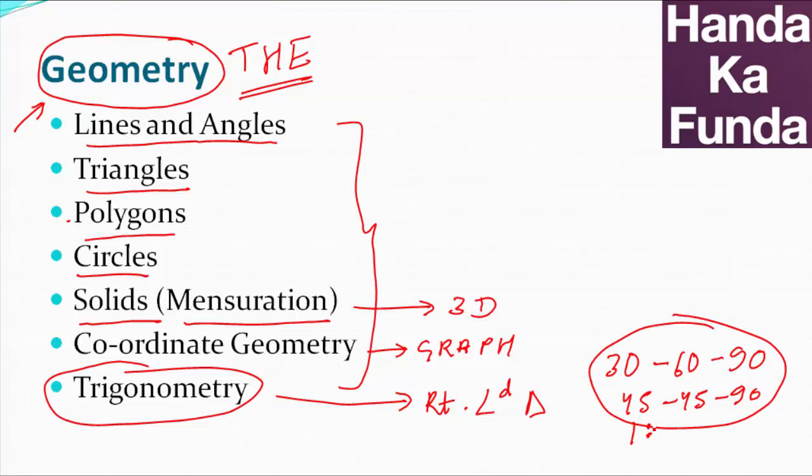Let me tell you the ratios also. 1 is to 1 is to root 2. And for 30, 60, 90, it's 1 is to root 3 is to 2. So, if you can remember this particular ratio associated with 30, 60, 90, and 1 is to 1 is to root 2 for 45, 45, 90, that is all the trigonometry that you need to know. Obviously, a little bit of applications of this.